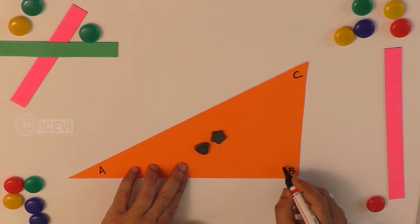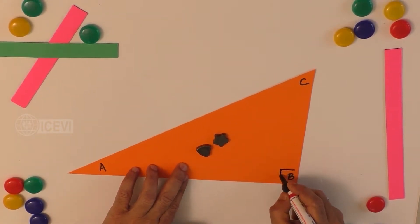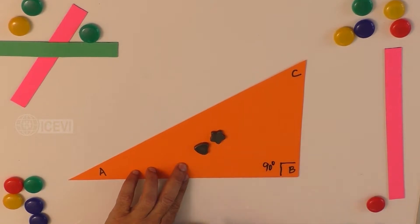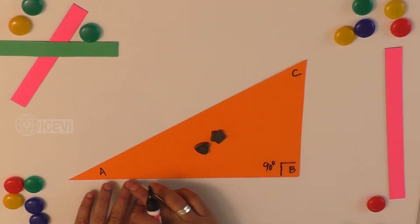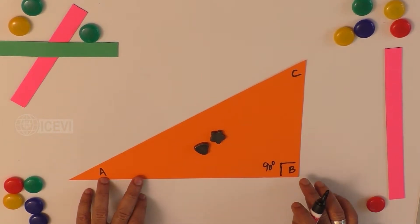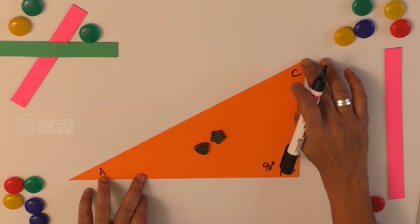triangle, let it be 90 degrees. Now there are three sides: AB is the base, BC is the opposite side, and AC is the hypotenuse.